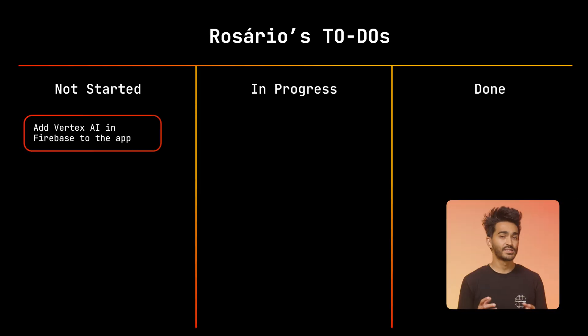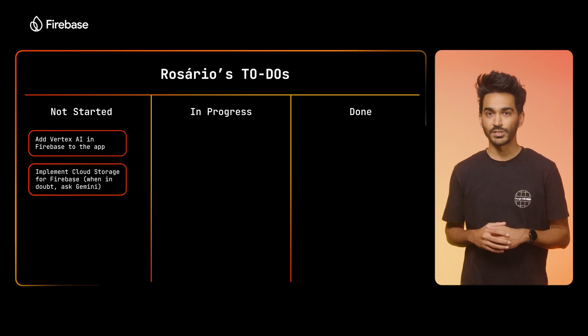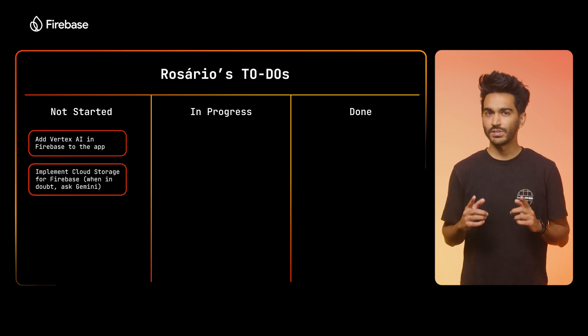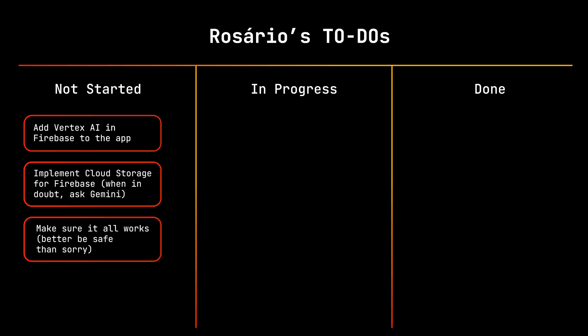Here's my plan for today. I'll start by adding the Vertex AI and Firebase SDK to the app and do a quick run to see if it worked. Vertex AI and Firebase is a way to securely call the Gemini model from your mobile apps running on iOS, Android, Web, or Flutter. Then I'll add Cloud Storage for Firebase to let users upload images. And finally, I'll do a manual test to make sure everything works and verify that API calls from my Android app are secured with AppCheck.